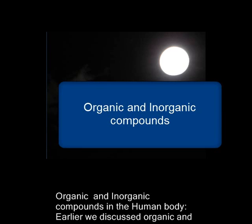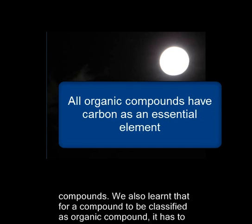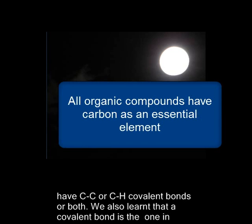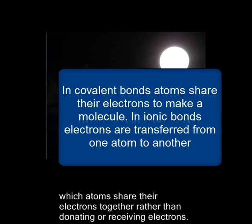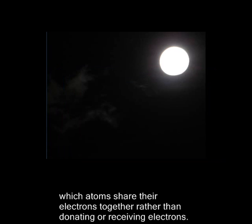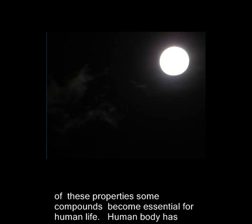Earlier, we discussed organic and inorganic compounds. We know that carbon is an essential element of all organic compounds. For a compound to be classified as an organic compound, it has to have carbon to carbon or carbon to hydrogen covalent bonds, or both. A covalent bond is one in which atoms share their electrons together rather than donating or receiving electrons. This binding and sharing of electrons gives compounds their unique properties, and because of these properties, some compounds become essential for human life.